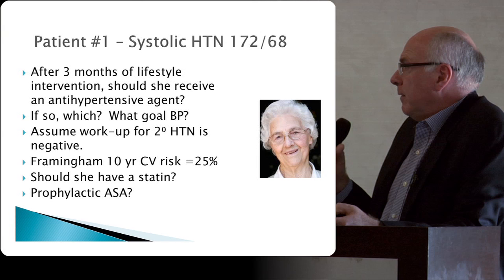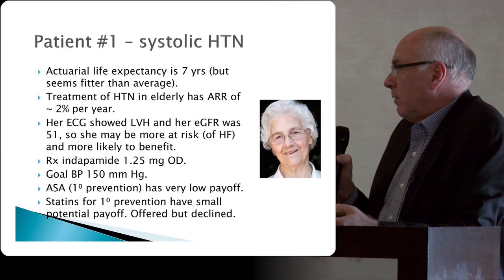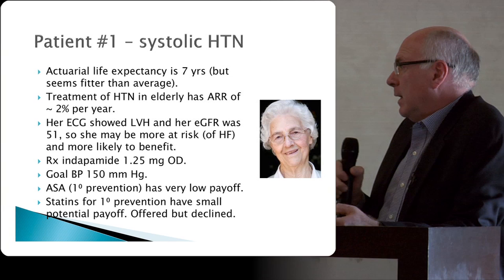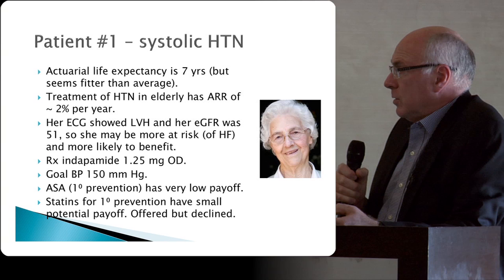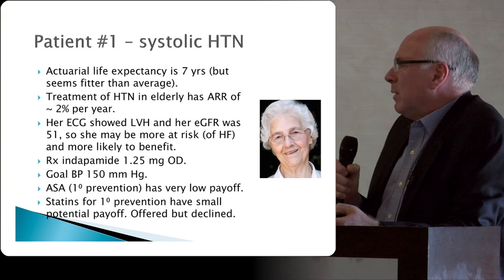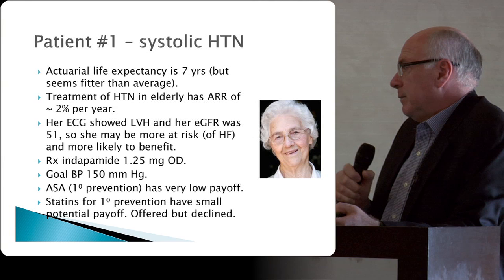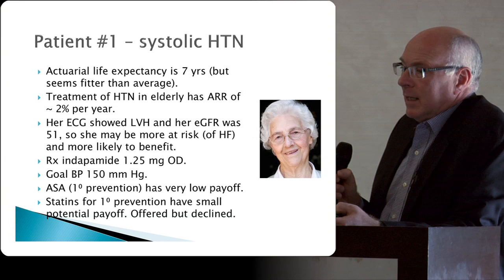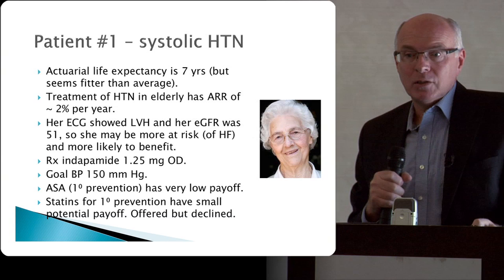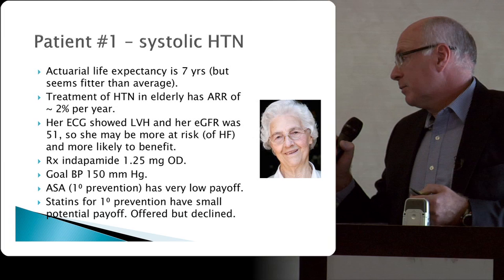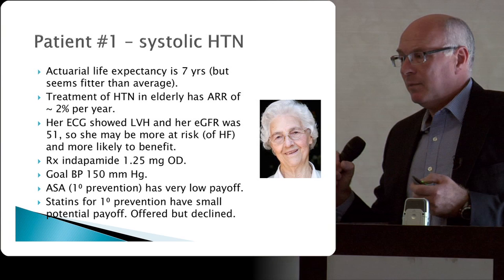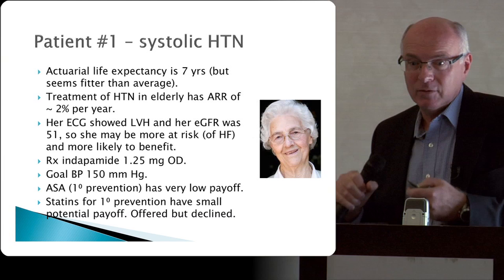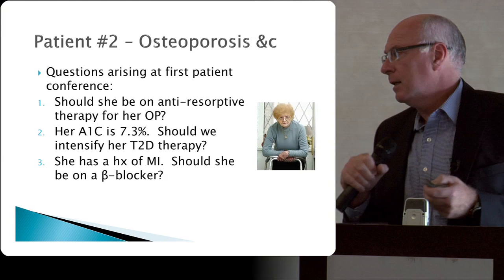Back to our three patients. Patient one: quite fit 85-year-old with systolic hypertension. Her actuarial life expectancy is 7 years, though she may do better given her fitness. Treatment of hypertension has an ARR of about 2% per year, so I'd suggest treatment — though I wouldn't be overly upset if she refused. If her ECG shows left ventricular hypertrophy and her eGFR is 51, her risk is considerably higher than average, swaying me toward treatment. As for aspirin for primary prevention — forget it. For statins for primary prevention, the payoff is very small; I'd half-heartedly suggest it and would be quite happy if she declined.